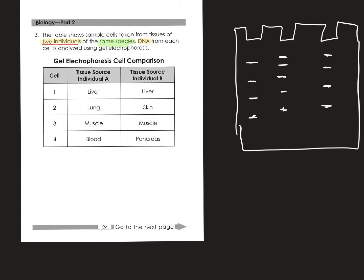The table shows tissue sources from individual A and individual B — liver, lung, muscle, blood, pancreas, and skin. Remembering that when we look at two individuals from the same species, we'd expect the same genes to be turned on in the liver for both individuals. They'll have the same genes but different alleles. In the skin, a certain set of genes are turned on that aren't turned on in the lung, and vice versa. Even though you have the same DNA in all your cells, different cells have different genes turned on and others turned off.